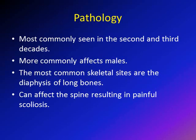Osteoid osteoma is a disease of young age — it happens in the second and third decades of life, which is why you can see it in children. It is more common in males than females in a ratio of two to one. It commonly affects the diaphysis of long bones, such as the tibia. It can also affect the spine, and if it affects the spine, it usually presents with painful scoliosis, as we're going to see.